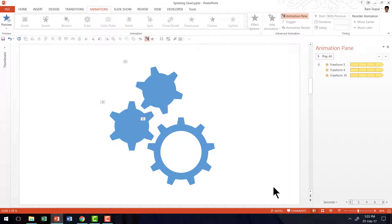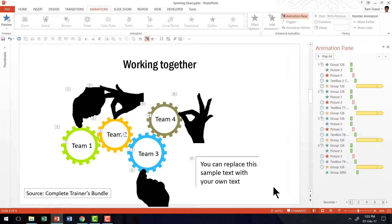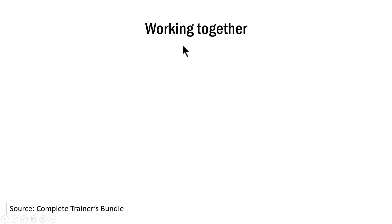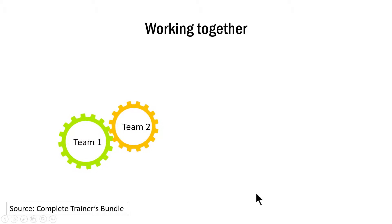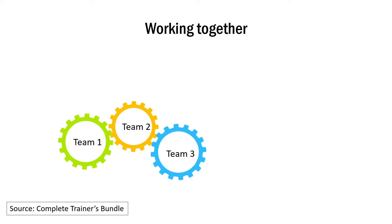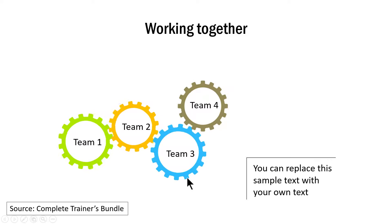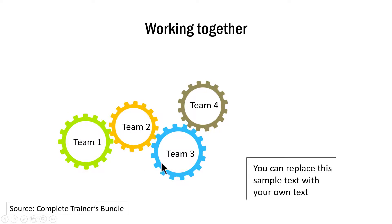Now what are some of the applications of spinning gear animation? I am going to show you some example templates from our Complete Trainers Bundle where I used spinning gear animations. Let us see how the spinning gear animations explain the concept of working together. On a click I bring in the first spinning gear representing Team 1, then another gear representing Team 2, then the third team, and then the fourth team. Here we are able to explain the concept of working together using spinning animation.